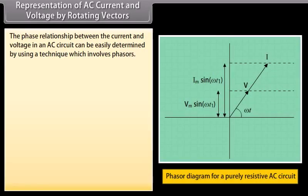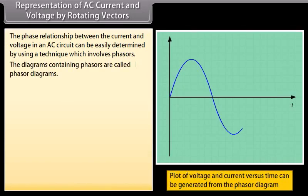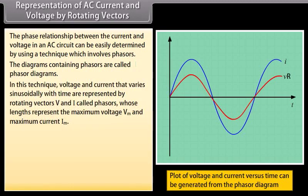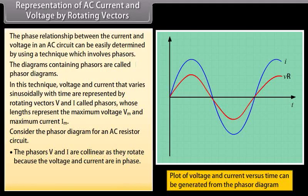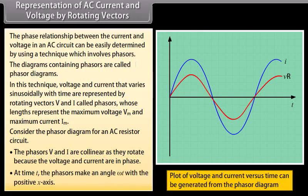Representation of AC current and voltage by rotating vectors: the phase relationship between the current and voltage in an AC circuit can be easily determined by using a technique which involves phasors. The diagrams containing phasors are called phasor diagrams. In this technique, voltage and current that vary sinusoidally with time are represented by rotating vectors V and I called phasors, whose length represent the maximum voltage Vm and maximum current Im. In a resistor circuit, the phasors V and I are collinear as they rotate because voltage and current are in phase. At time t, the phasors make an angle ωt with the positive x-axis.